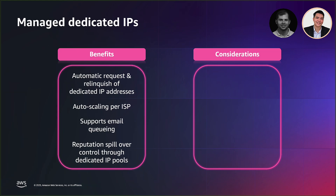The managed IP pool also takes into consideration ISP-specific policies. For example, if SES detects that an ISP supports a low daily send quota, the pool scales out to better distribute traffic to that ISP across more IP addresses. Once the warm-up phase is complete, any excess capacity is queued and sent only through the dedicated IP pool — therefore, managed dedicated IPs also supports email queuing. Last but not least, you can create a managed dedicated IP pool per use case to prevent potential reputational damage between them.